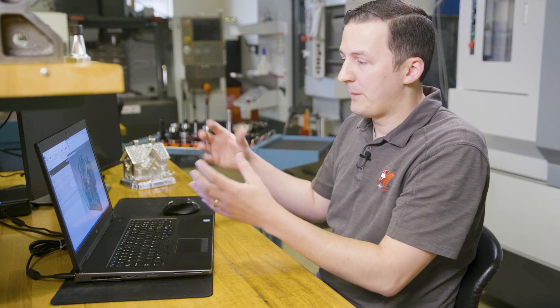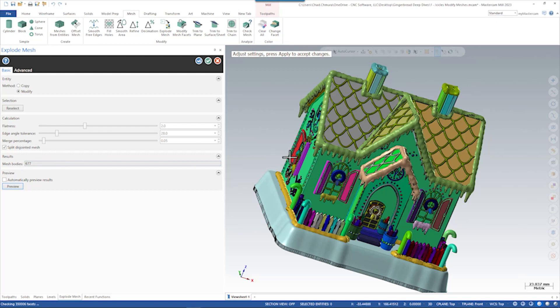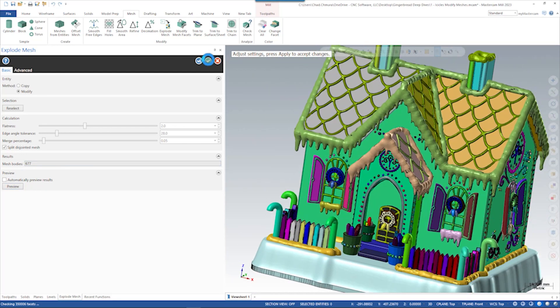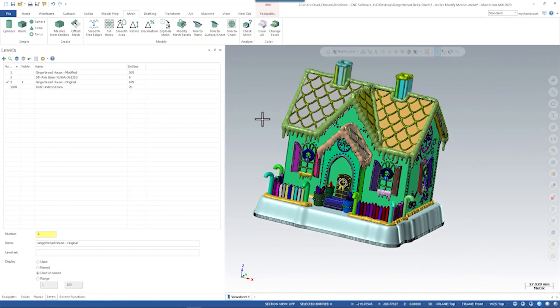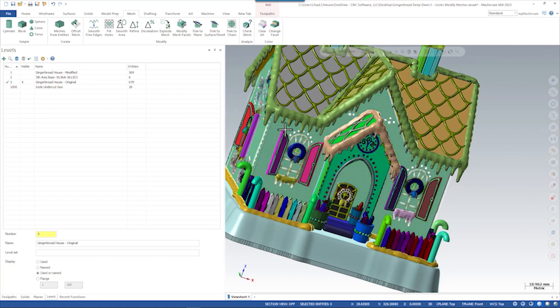But what it will also do on a really nice mesh body like this one is it will take the bodies that were modeled individually and saved as one piece and break them back apart again. If I run split disjointed mesh and click preview, we see now there are 677 bodies that came out of this one piece. When we run this, Mastercam actually will turn all the bodies into different colors, which makes it a lot easier to work with that file.